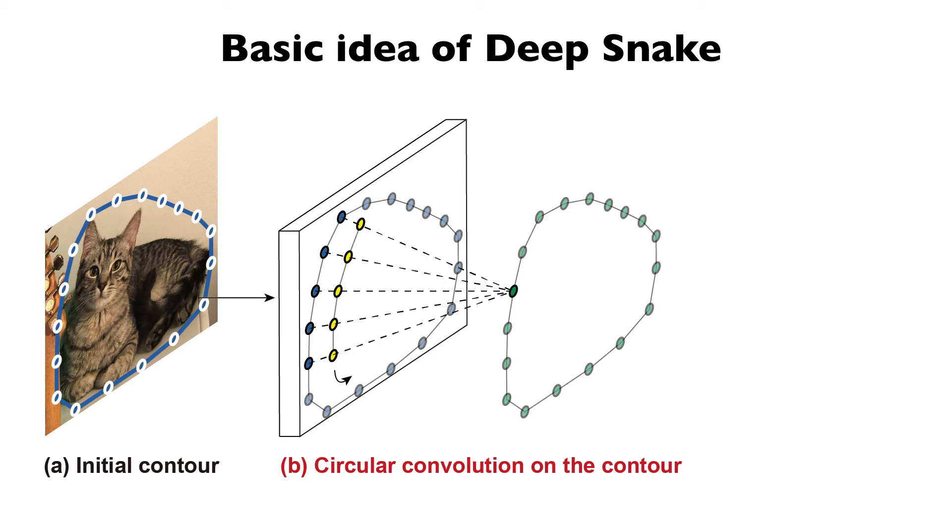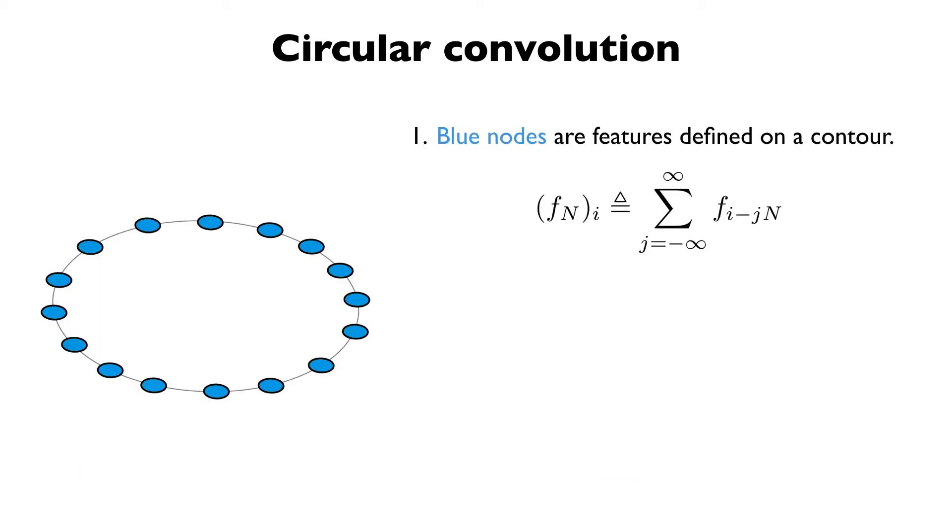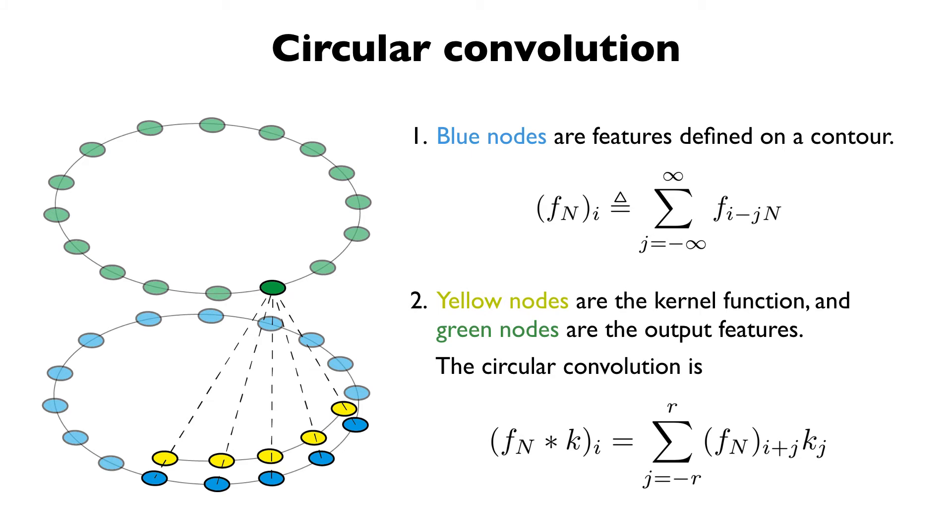Then circular convolution is introduced for structured feature learning on the contour. The input of circular convolution is features defined on a contour, which is a periodic signal. As shown in the image, yellow nodes represent the 1D kernel function and green nodes are the output. The circular convolution indicates that a 1D kernel is convolved in the standard way with a periodic function.